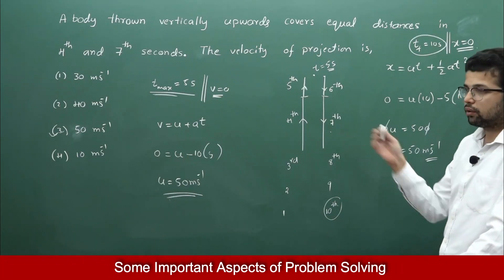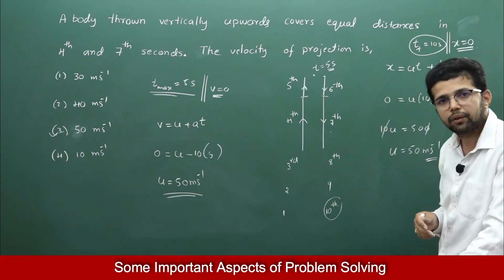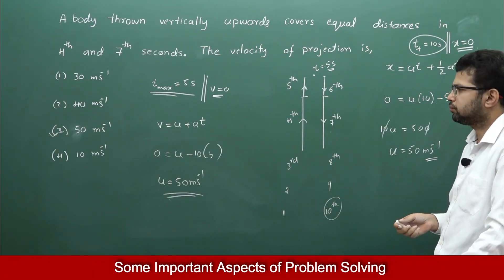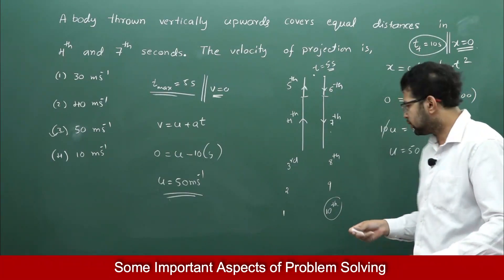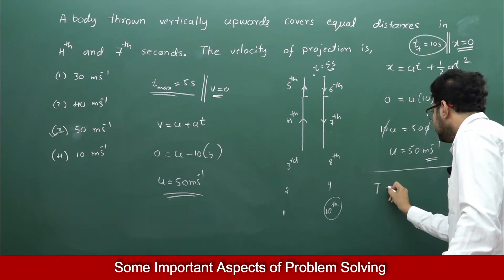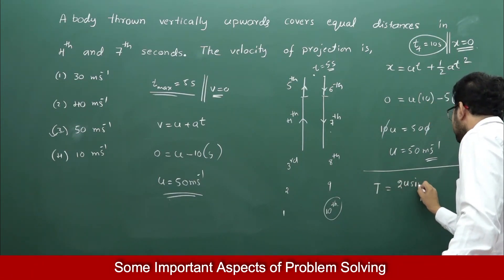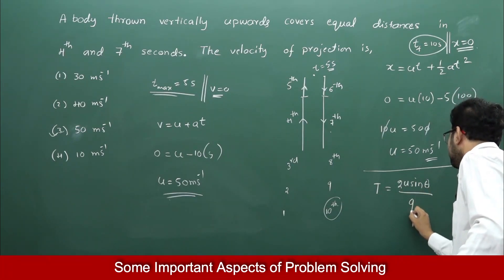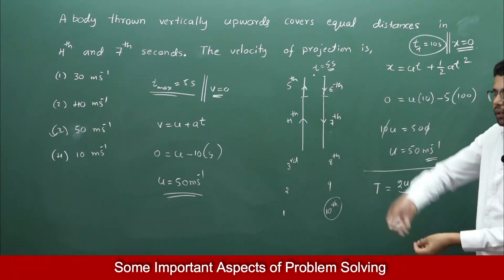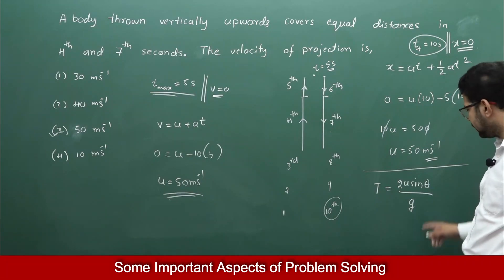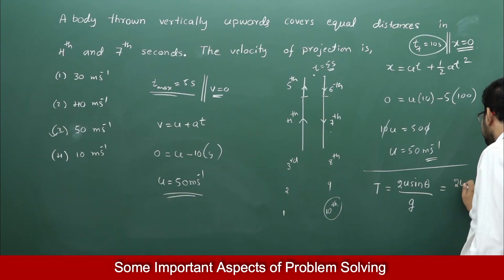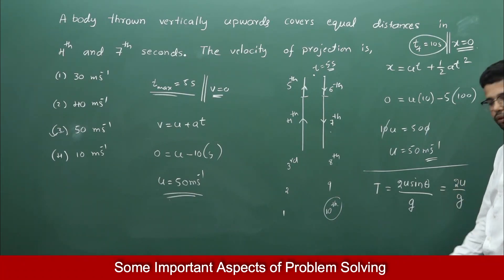We got U = 50 using V = U + aT, and also using X = UT + ½aT². We can also use the time of flight equation from projectile motion: time of flight = 2U sinθ / g. For vertical projection, the angle is 90° and sin 90° = 1, so time of flight = 2U / g.